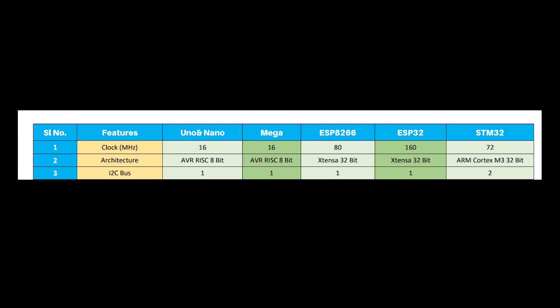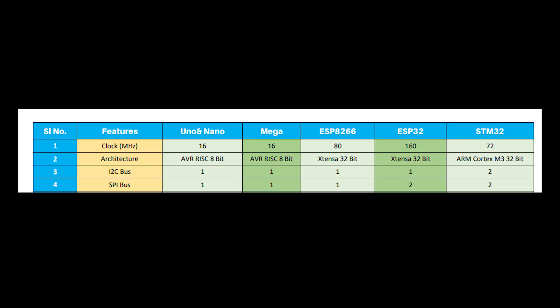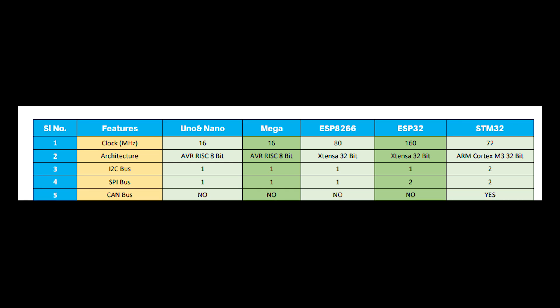Now I will discuss about communication protocol accessibility. For I2C: Arduino Uno, Nano, Mega, ESP8266, and ESP32 have a single-channel I2C communication port, but STM32 has dual-channel I2C. For SPI: Arduino Uno, Nano, Mega, and ESP8266 have a single SPI bus, but ESP32 and STM32 have dual SPI buses.